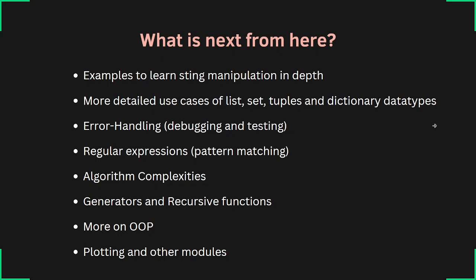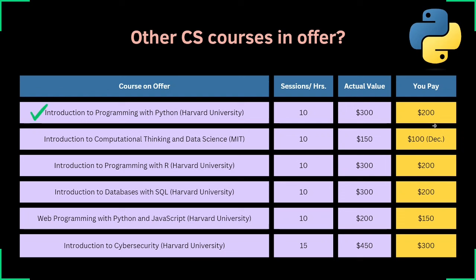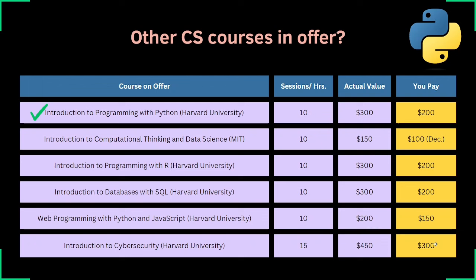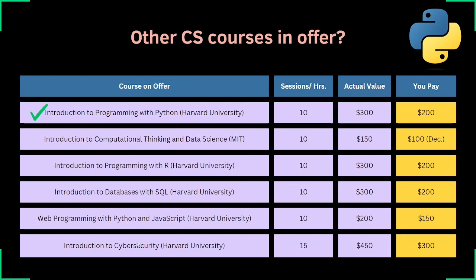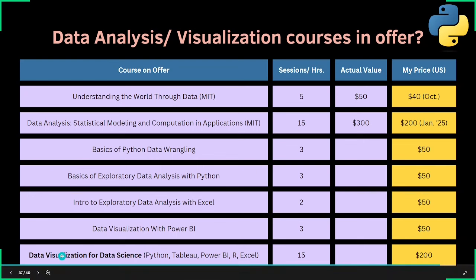Students expressed interest in upcoming courses including cybersecurity — possibly in October for 10 sessions at $200 — as well as web programming, JavaScript, and database visualization. The instructor encouraged students to solidify their current Python base first before moving on, and said they would ping students when new courses are available.